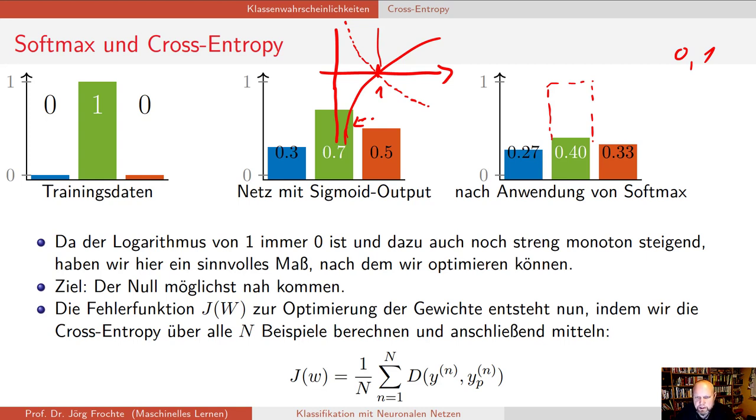Was wir jetzt machen, ist, wir nehmen unsere gesamte Trainingsmenge, führen eben diese Funktionen darauf aus, summieren das, und im Allgemeinen bilden wir dann mittleren Fehler und teilen durch die Anzahl der Elemente. Das ist dann eine mittlere Kreuzentropie. Als Gutes haben wir ein anderes Fehlermaß. Ist das jetzt eindeutig besser als das letzte? Ja, das ist häufig schon besser.